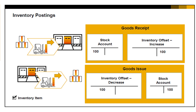Here we see a graphic representation of the postings for a goods receipt and a goods issue. A goods receipt creates a journal entry that posts the value of the received goods on the debit side of the stock account and the credit side of the inventory offset increase account. A goods issue creates a journal entry that posts the value of the issued goods on the debit side of the inventory offset decrease account and the credit side of the stock account.